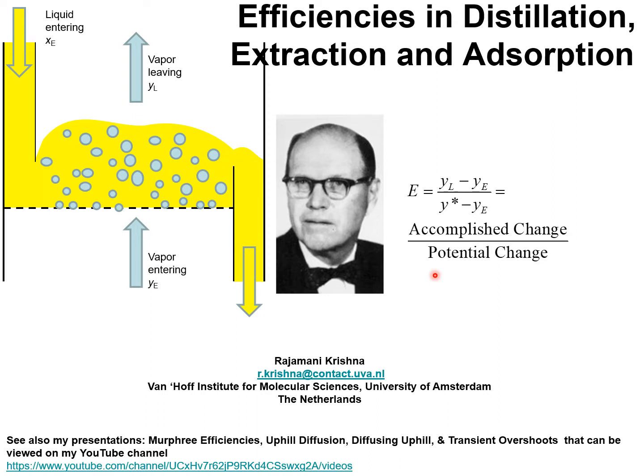Theoretically, for a ternary or quaternary mixture, there is no requirement that the component efficiencies be bounded — in other words, lie between zero and unity. In this presentation I would like to demonstrate, firstly, that the component Murphy efficiencies for multi-component distillation are indeed unbounded and can have component efficiencies greater than unity or less than zero.